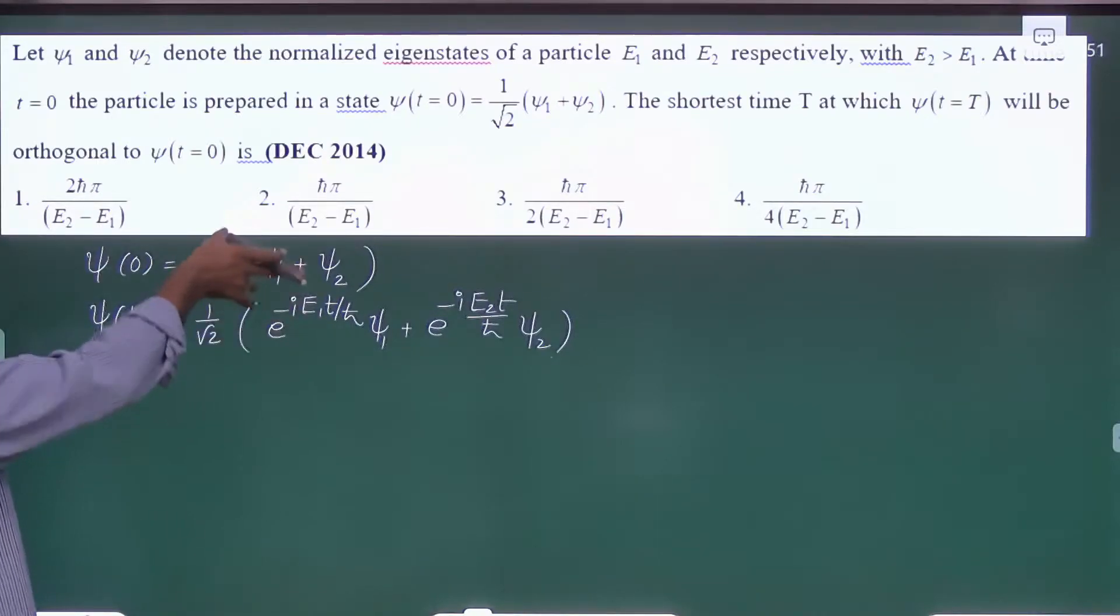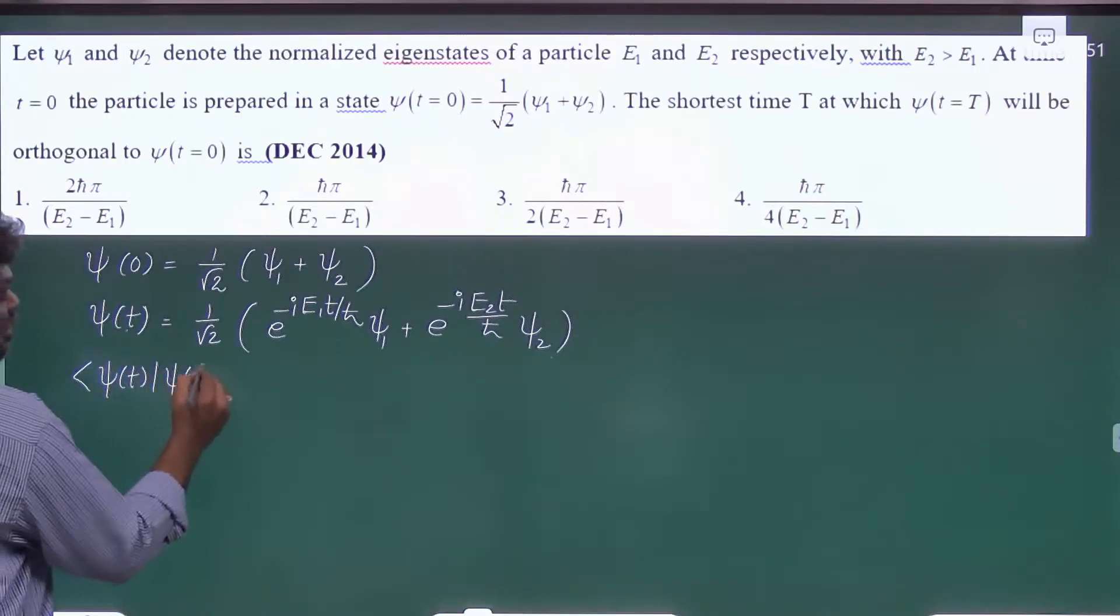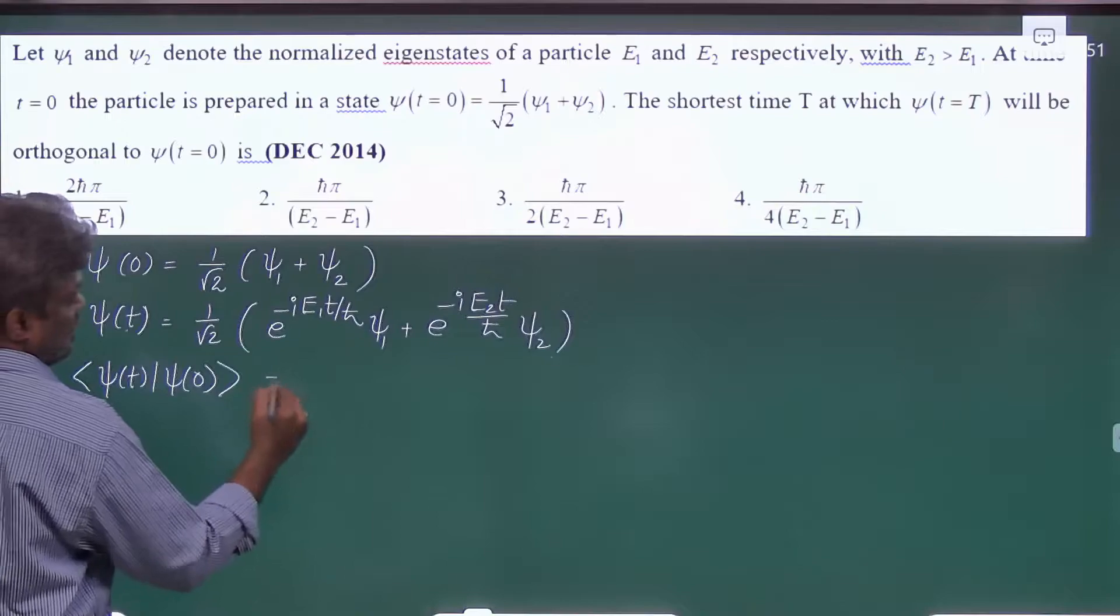Now just apply the orthonormal condition for this, that is inner product Psi of t, Psi of 0. This is equal to 0.